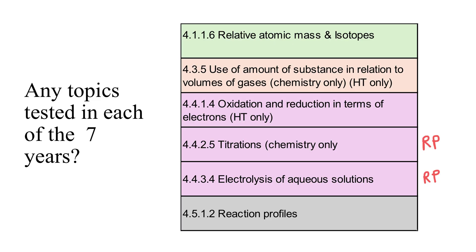Another helpful thing to do is to look for subtopics that are assessed every single year. There have been seven papers for Paper 1, and on those papers there have been six topics assessed every single year: relative atomic mass and isotopes; using amount of substance to calculate the volume of gases; redox in terms of electrons; titrations; electrolysis of solutions; and reaction profiles.